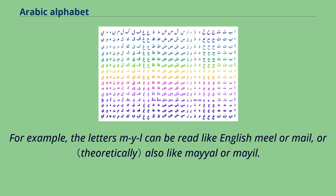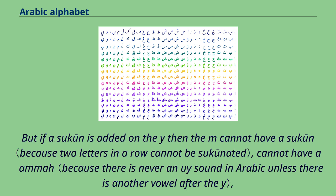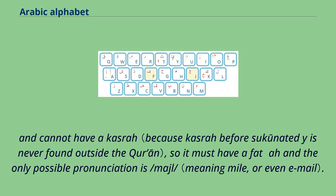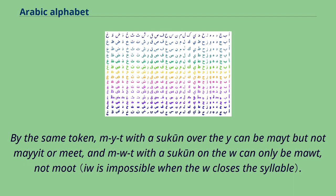For example, the letters 'myl' can be read like English 'mail' or 'male', or also like 'mole' or 'mile'. But if a sukun is added on the ya, then the meem cannot have a sukun, cannot have a damma, and cannot have a kasra, so it must have a fatha and the only possible pronunciation is 'mayl'. By the same token, 'myt' with a sukun over the ya can be 'mayt' but not 'moot' or 'meet', and 'mwt' with a sukun on the waw can only be 'mawt', not 'moot'.